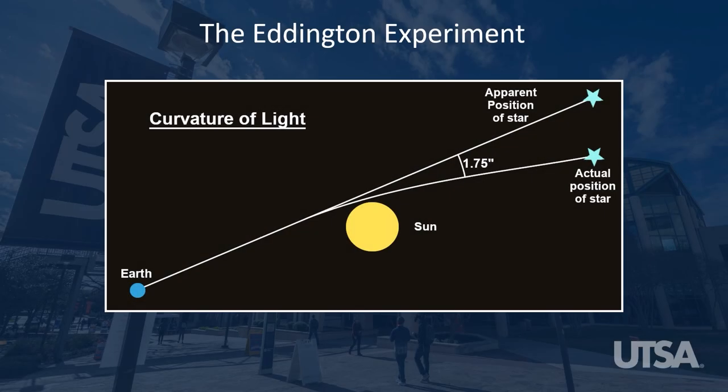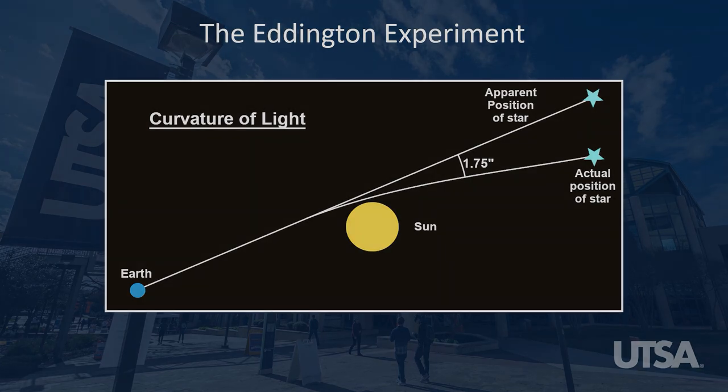Sir Arthur Eddington took multiple images of stars during the eclipse which were in the Sun's immediate area. If Einstein's theory was correct, the light of these stars, when it passed near the Sun, would bend due to the gravitational field of the Sun. In essence, the position that a star would appear to have to an observer would be different than the actual location of the star. He published his results the following year and confirmed Einstein's theory.